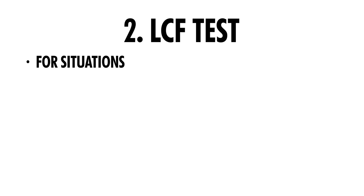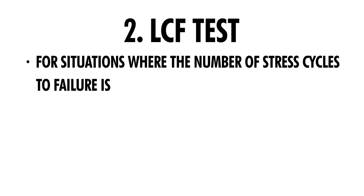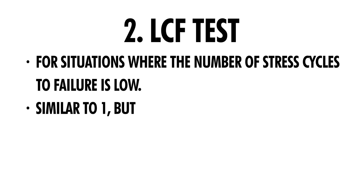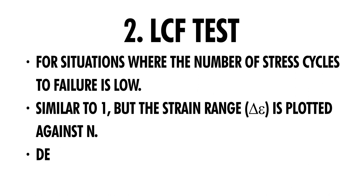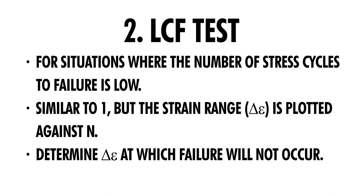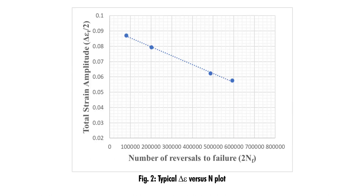The second test is the low cycle fatigue test. This involves situations where the number of stress cycles to failure is low, hence the name low cycle fatigue. It is similar to the first case, but instead of the stress range, we plot the strain range delta epsilon against the number of cycles to failure N. The purpose is to determine the value of delta epsilon at which failure will not occur.